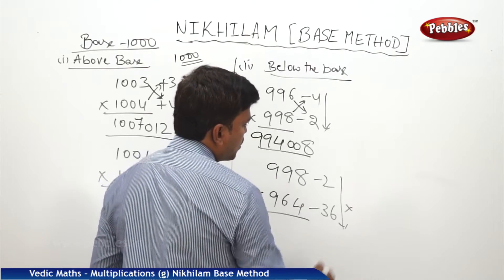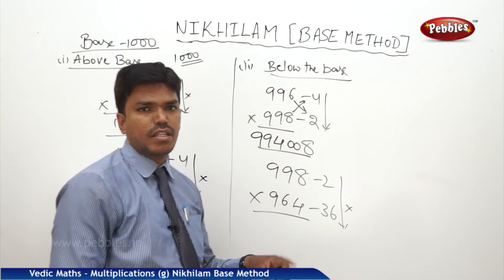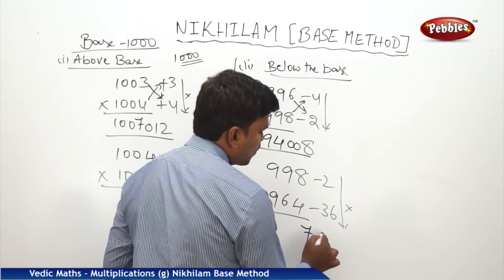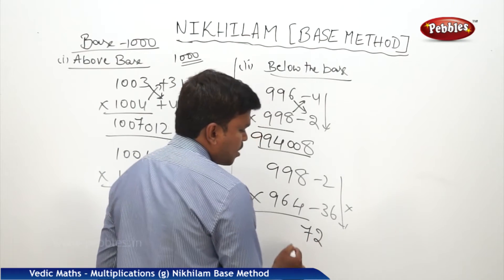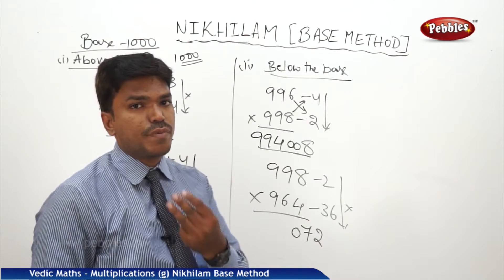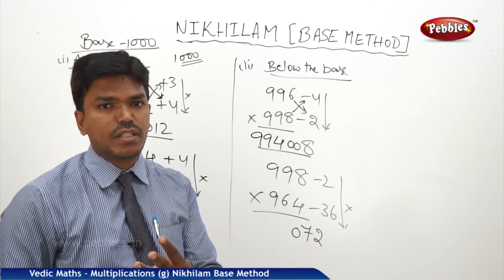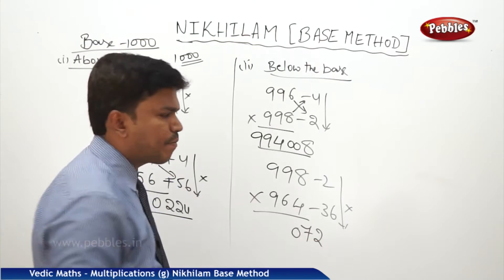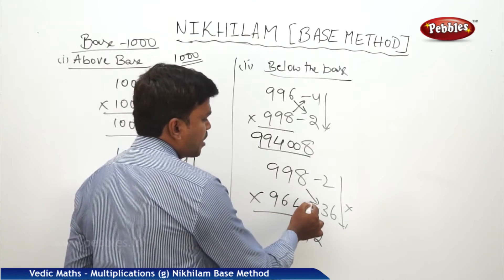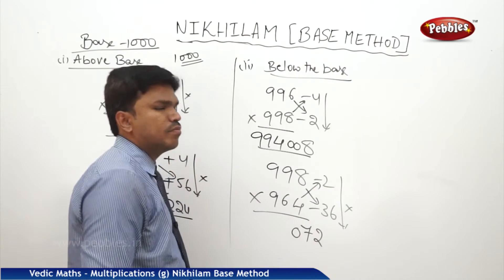Multiply these two — minus into minus is plus, so 2 times 36 is 72. But it should be 072, because there should be three digits on the right side part. Now cross subtraction: 998 minus 36, or 964 minus 2 — whichever you feel easy, do that part, because both are going to give the same answer.